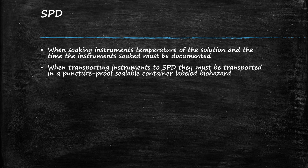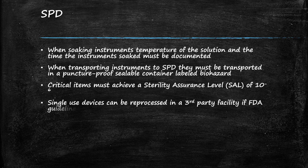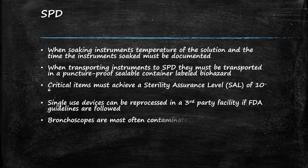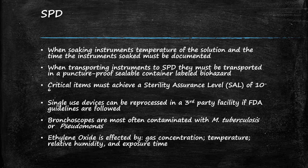Critical items must achieve a sterility assurance level of 10 to the 6th power. Single-use devices can be reprocessed in a third-party facility if the FDA guidelines are followed. Bronchoscopes are often contaminated with MTB or pseudomonas. Ethylene oxide is affected by the gas concentration, temperature, relative humidity, and exposure time.